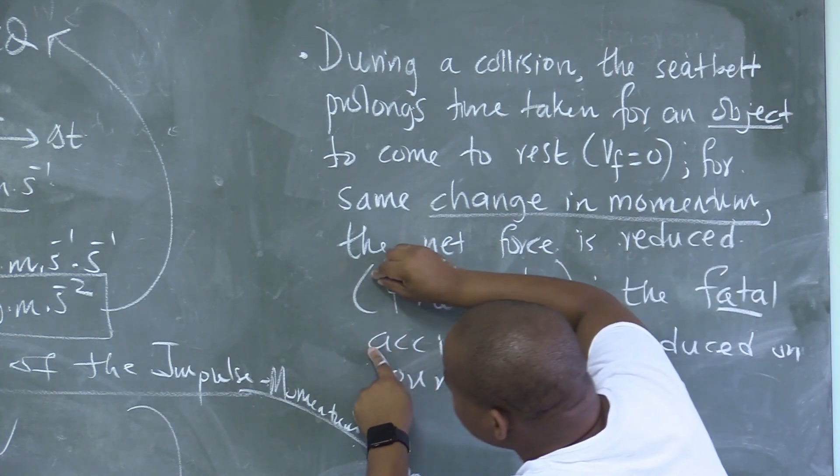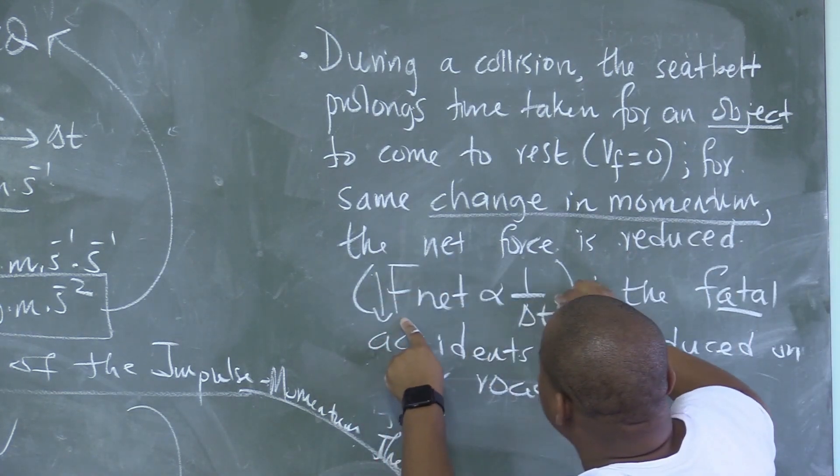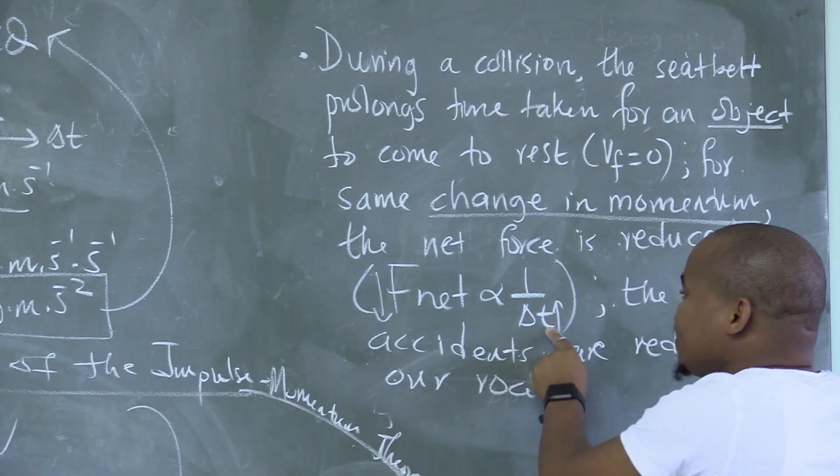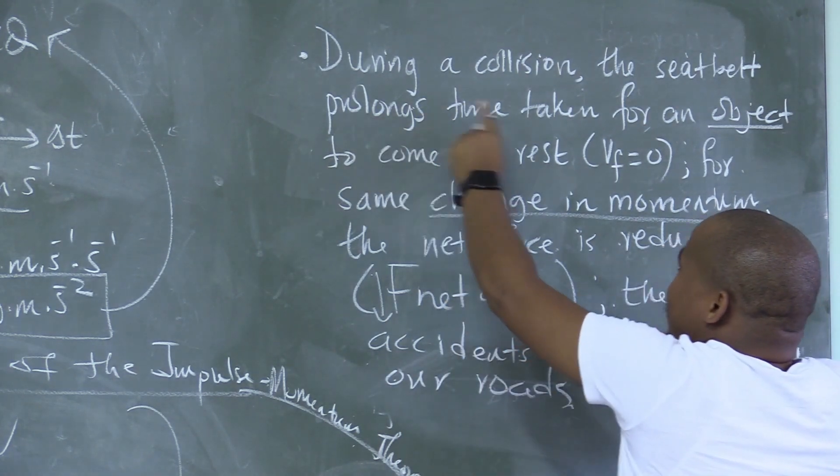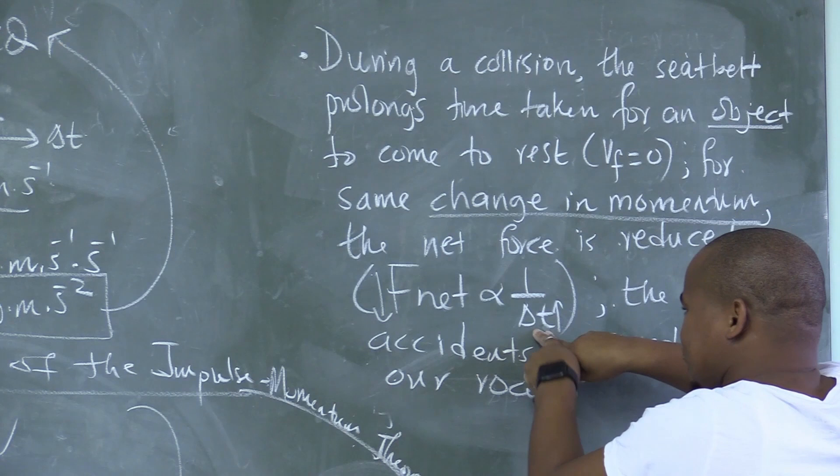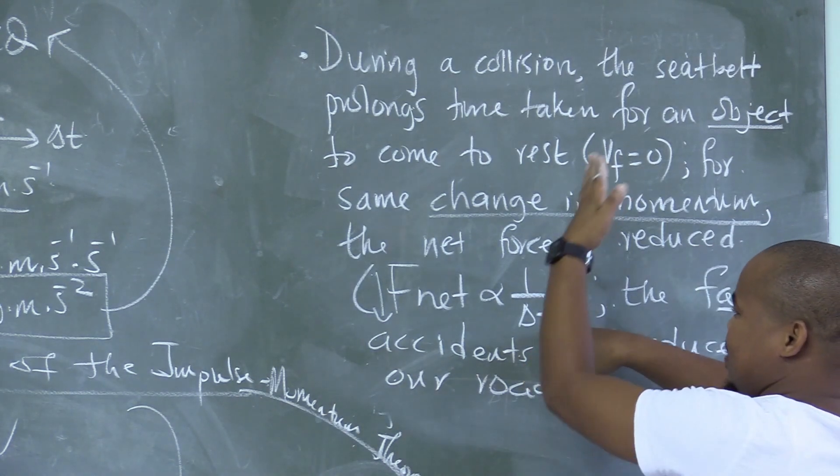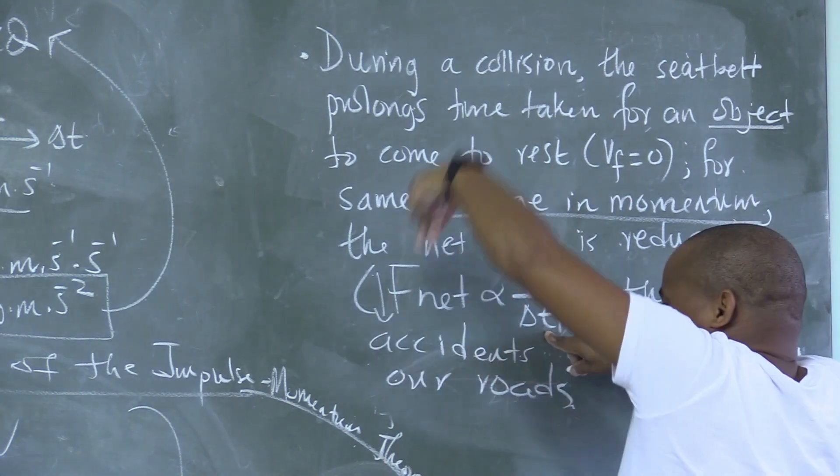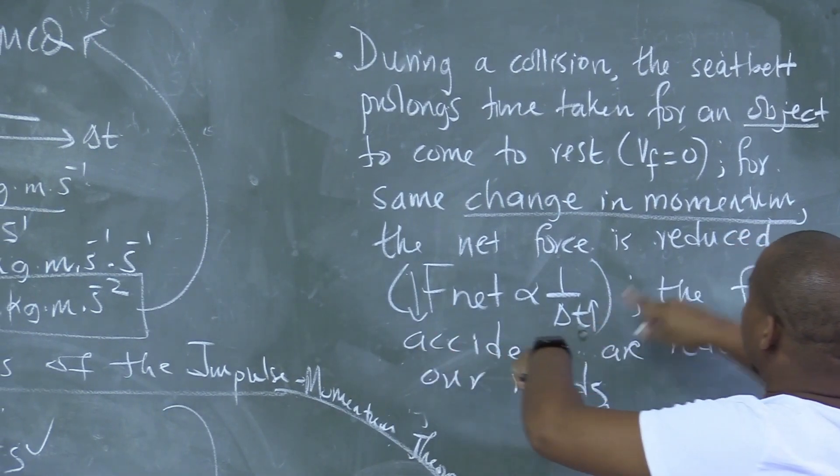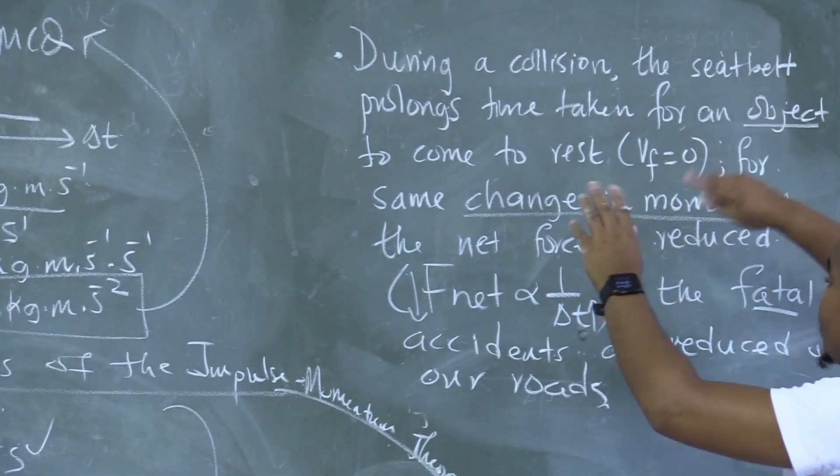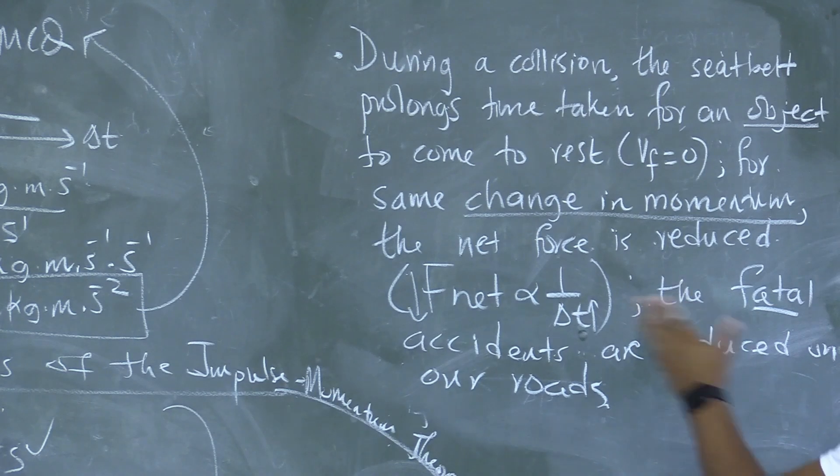Look at what is happening here. The time in this force is increased, it is reduced. So the net force between the object, which is the passenger, and the dashboard in an accident.